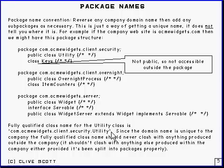And since domain names are unique — because the internet registry makes sure they're unique — what you have is something that's going to be unique to the company. And if you've divided up your processing in the right sort of way so that if you've got thousands of classes,